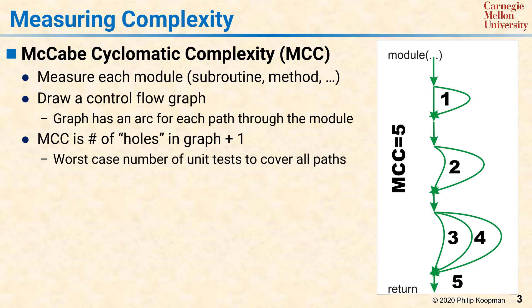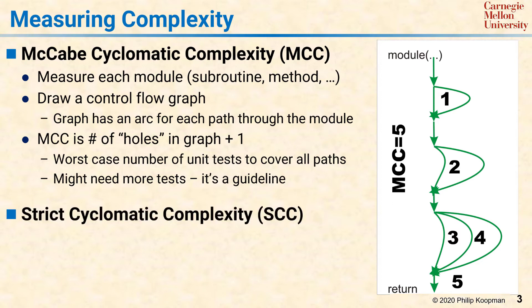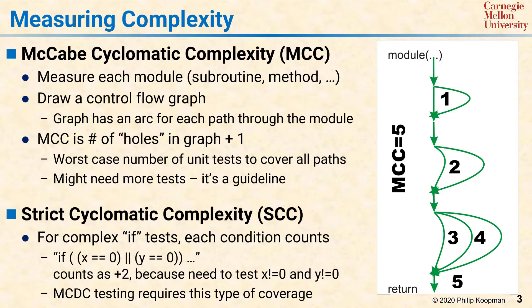What the MCC means in practice is that you might have to run up to five different unit tests to cover all the paths in the module. Sometimes you might need fewer tests depending on the actual code and branch paths, but in general MCC correlates with the effort you'll need to spend on creating unit tests to get full coverage. A related metric is called strict cyclomatic complexity, or SCC. This differs from MCC in that it looks inside the conditions for an if statement — if there are multiple conditional elements that might need to be tested separately, a higher score is assigned. For example, an if statement with a condition of either x equals zero or y equals zero would need to be tested for both possible conditions, resulting in an SCC score of plus two for that compound condition. A type of testing coverage called modified condition decision coverage, or MCDC, requires this level of testing, so if you're using MCDC coverage, then SCC is a better metric for you.